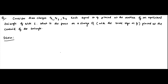Hello friends, so here is another question on the superposition principle due to multiple electrical charges. We have to consider three charges Q1, Q2, Q3, each having a value equal to small q. They have the same value: Q1 equals Q2 equals Q3 equals q. They are placed at the vertices of an equilateral triangle of side L. What is the force on a charge Q, having the same sign as Q1, Q2, Q3, which is equal to plus Q, placed at the centroid of the triangle?